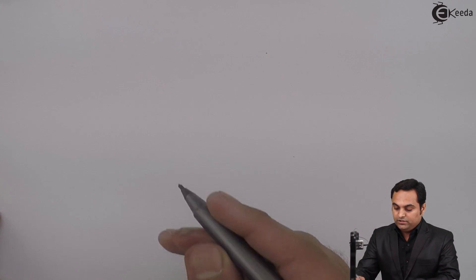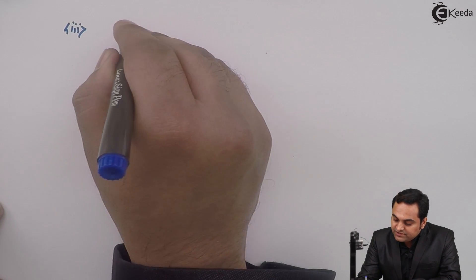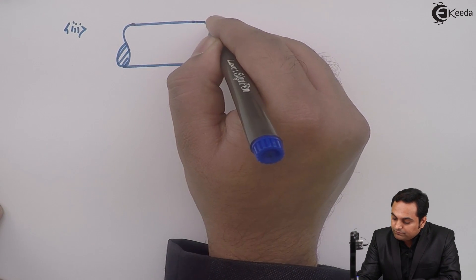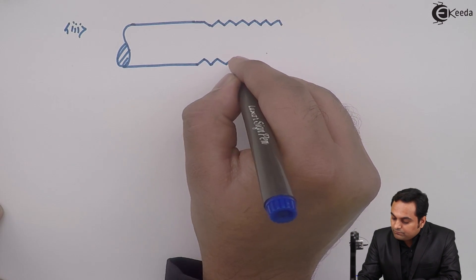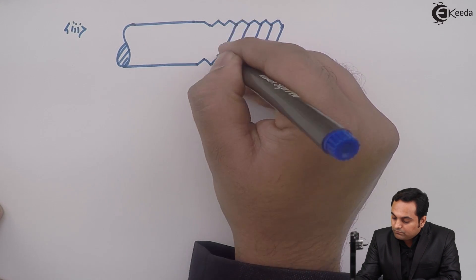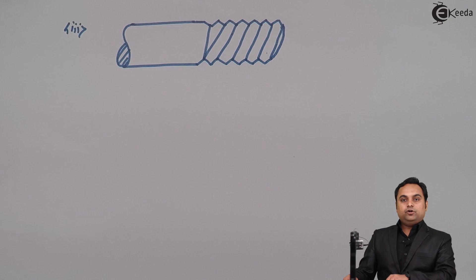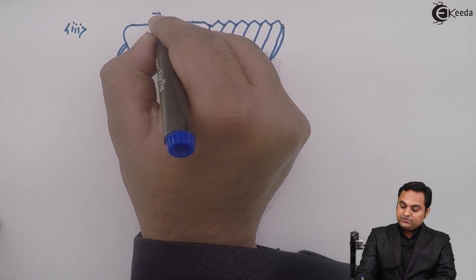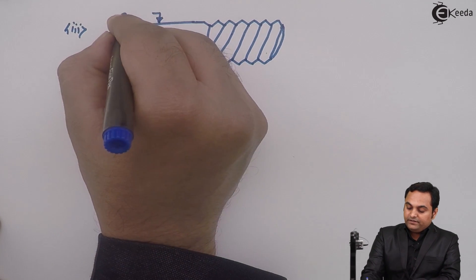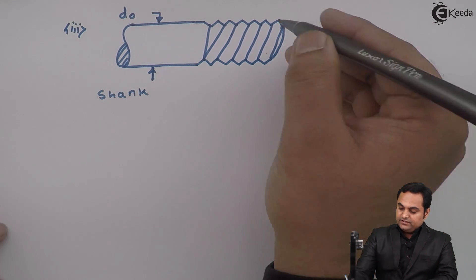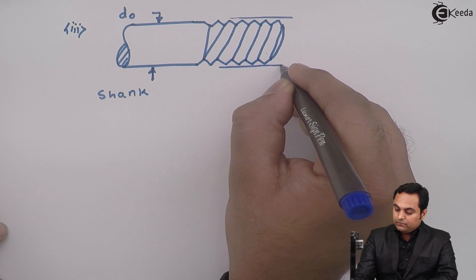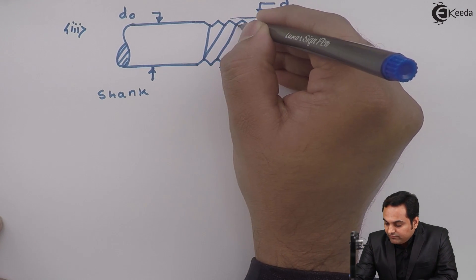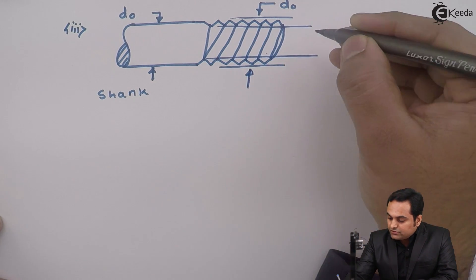The last method involves an object which has threads. Suppose we have a threaded object as shown in the diagram. The shank has a diameter D0, and the threads also have their major diameter as D0, called the nominal diameter. There is also a minimum diameter called DC, the core diameter.